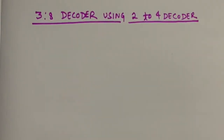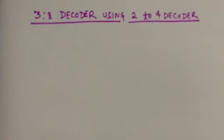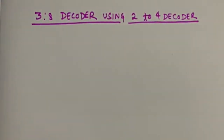Hey everyone, welcome to the channel. Today I will discuss how to make a 3-to-8 decoder using two 2-to-4 decoders. Before that, I have made a video on a 2-to-4 decoder with enable input, so please have a look at that video — I have given the link in the description box.